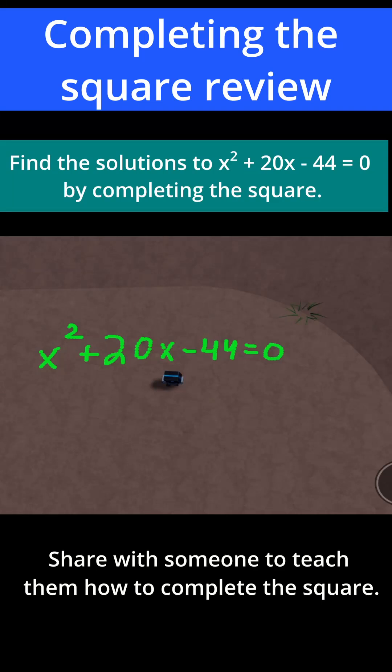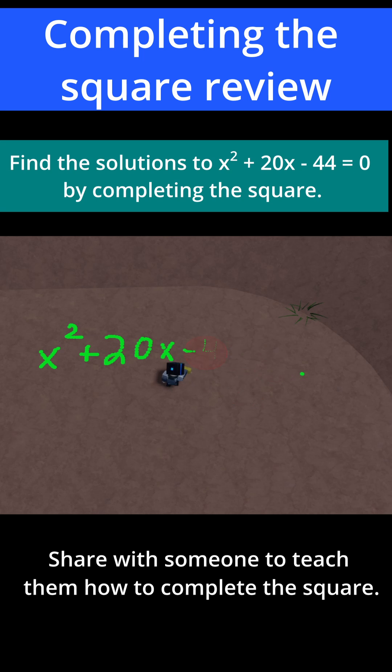Our final problem of the day says x squared plus 20x minus 44 is equal to 0, and we need to solve this by completing the square. The first thing I'm going to do is add 44 to both sides, and if I do that I'll have x squared plus 20x is equal to positive 44.